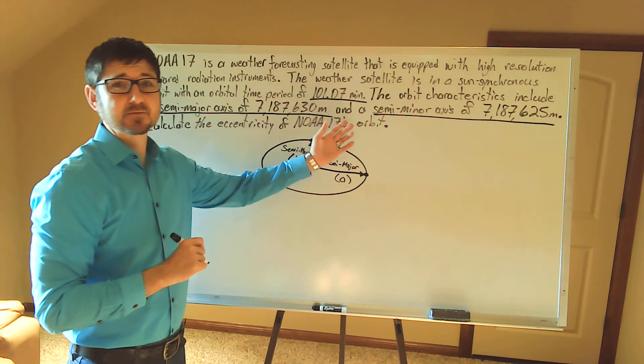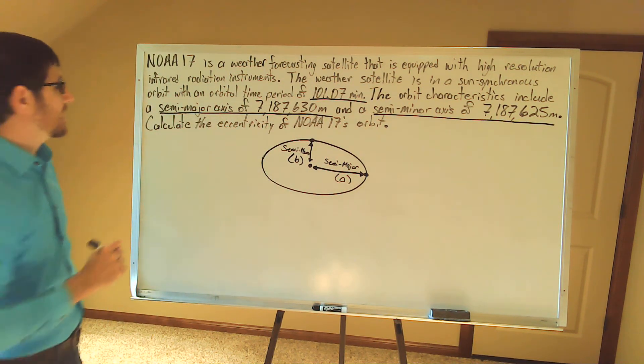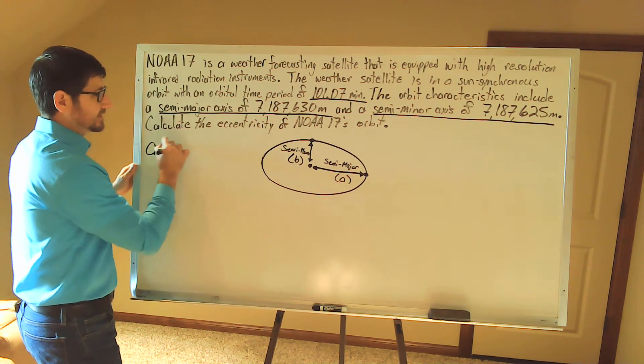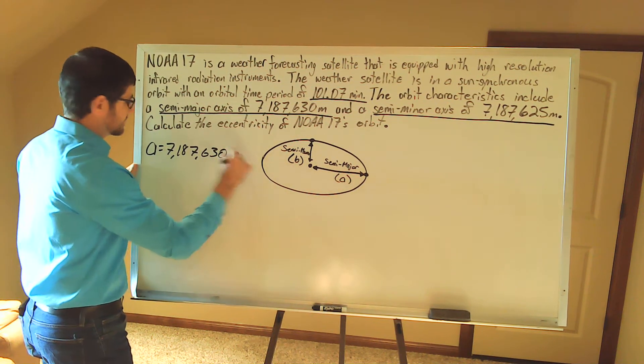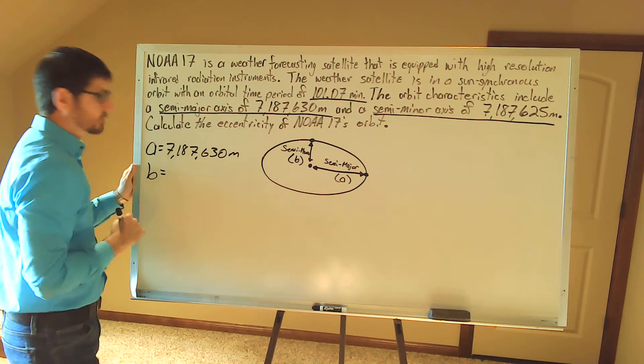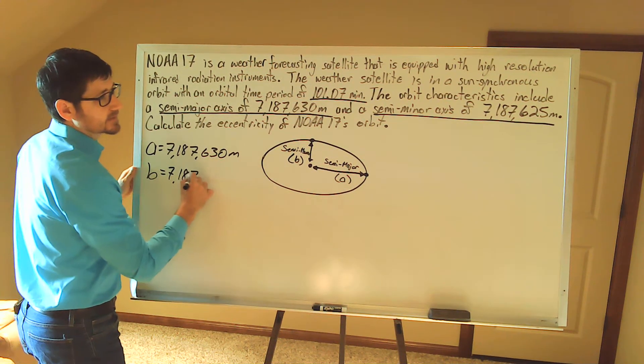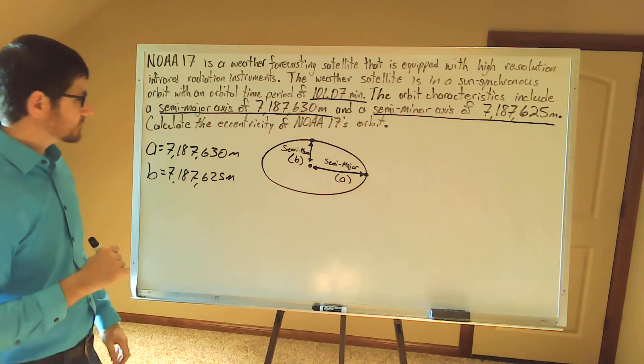Now the orbit characteristics for the semi-major and semi-minor axis are given to us, so this semi-major axis identified by a is 7,187,630 meters. My semi-minor dimension is going to be 7,187,625 meters.